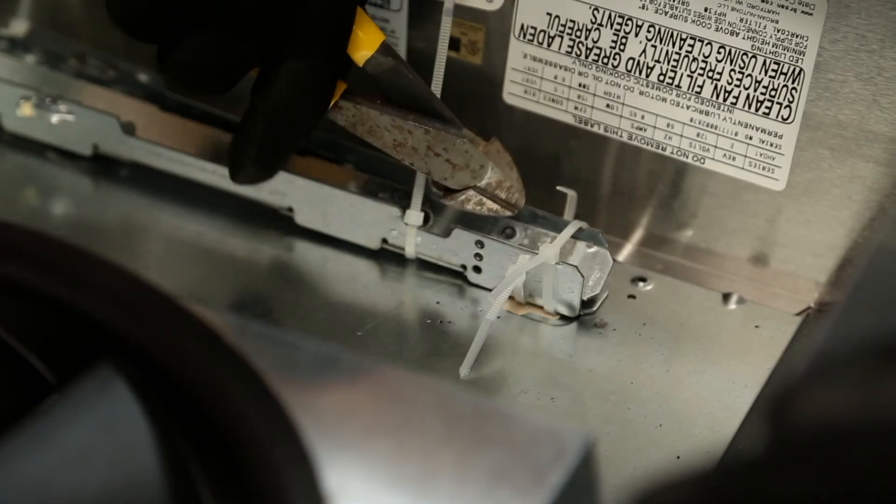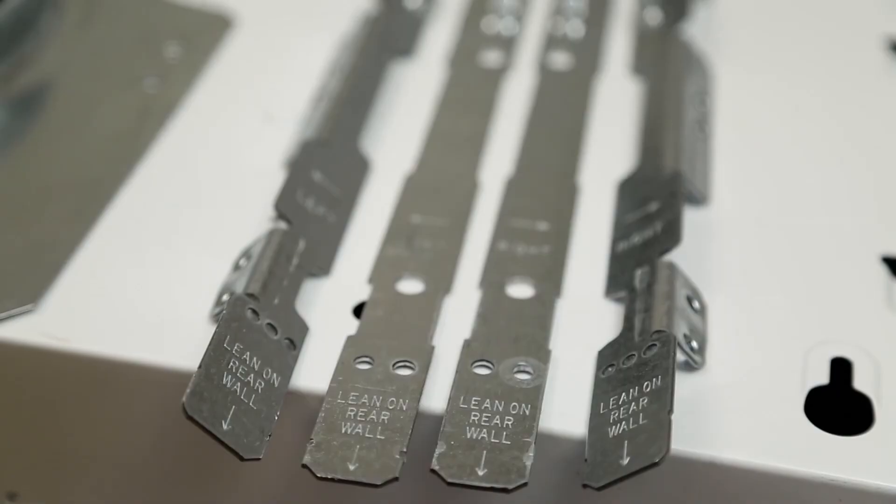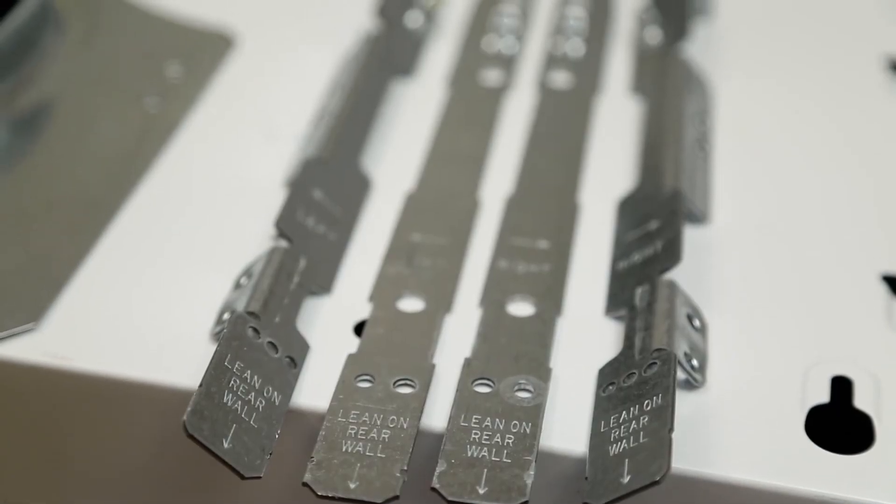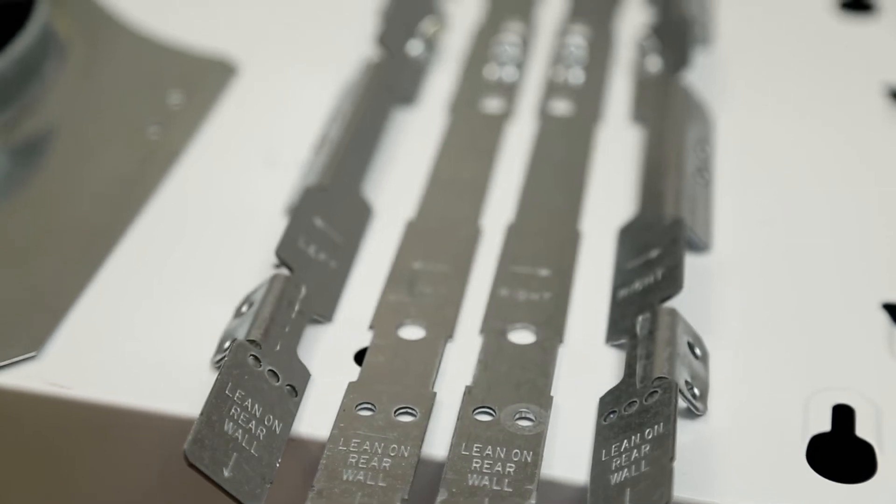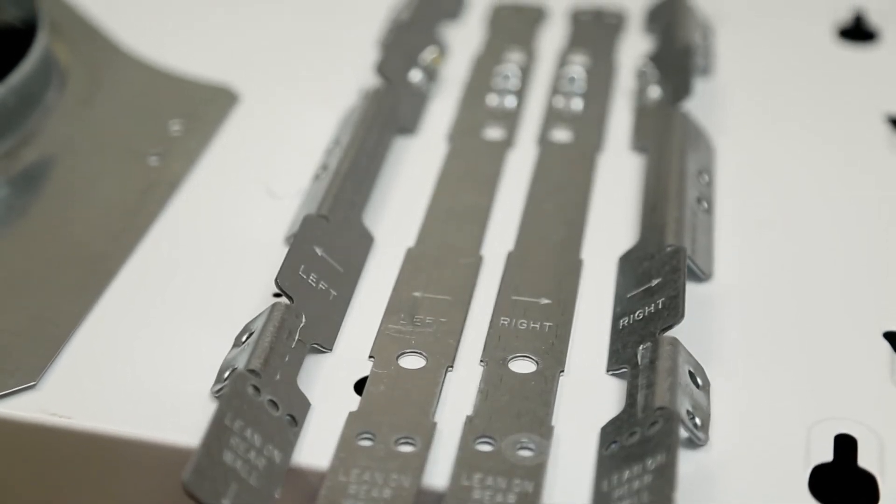Use the included EZ-1 brackets for the installation. There are four included brackets: two for framed cabinets and two for frameless cabinets. The brackets are engraved to tell you which one goes on which side.